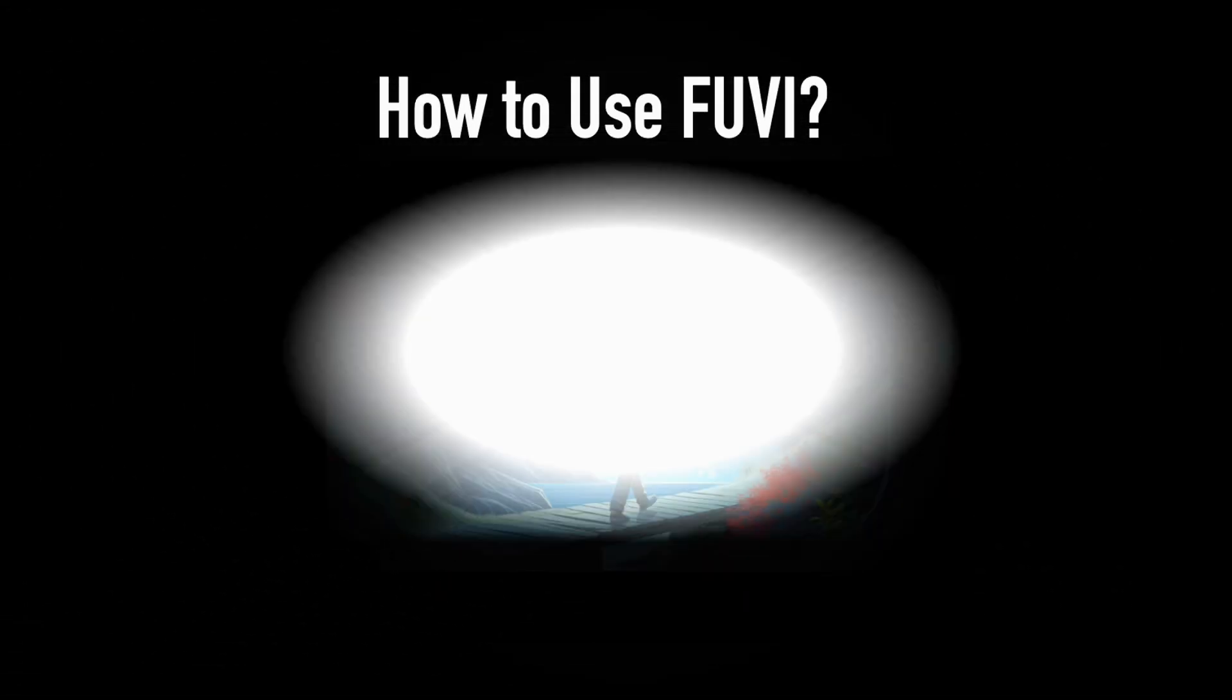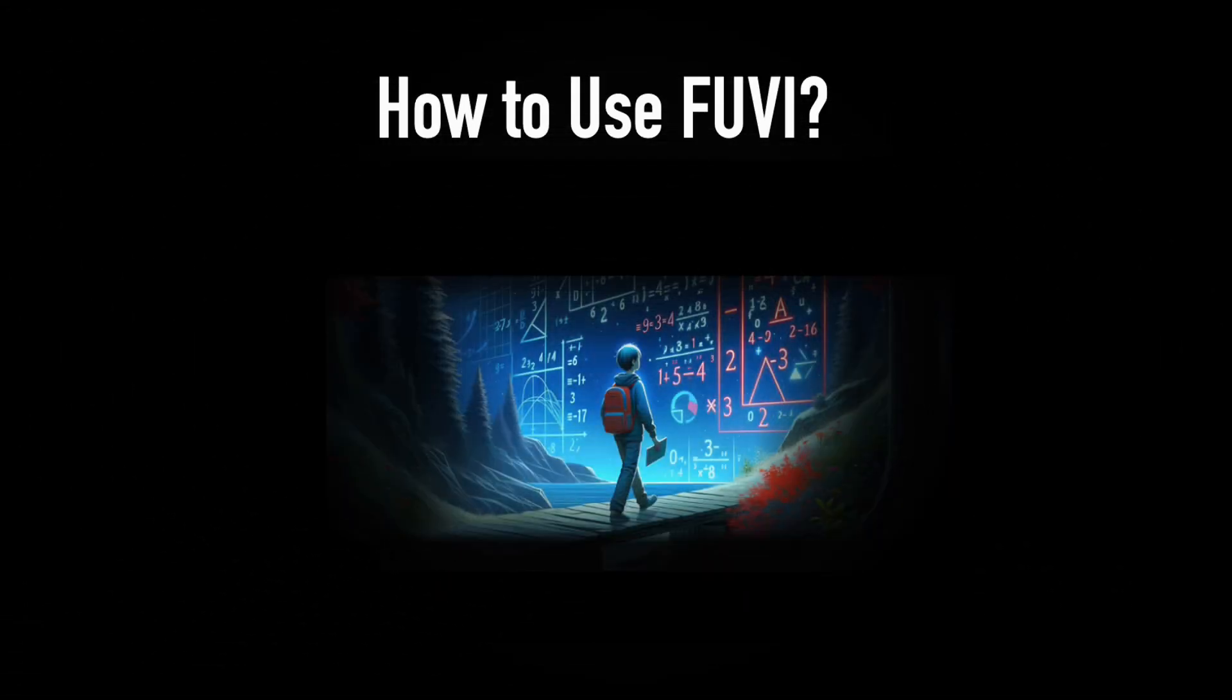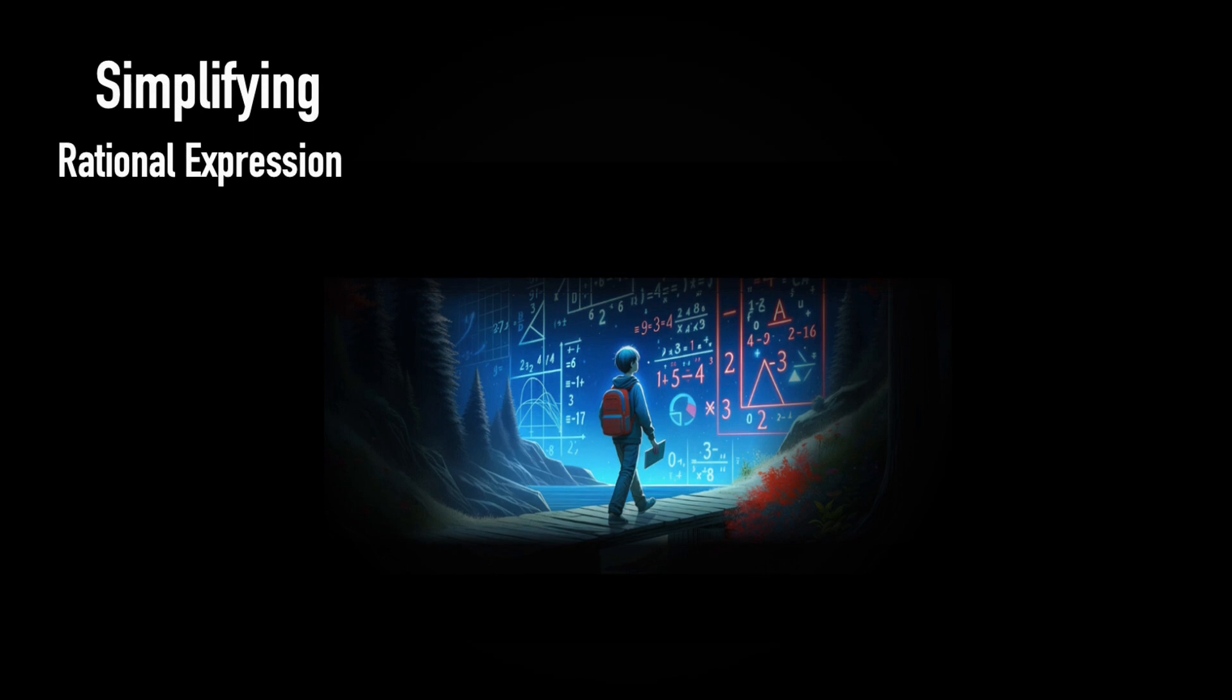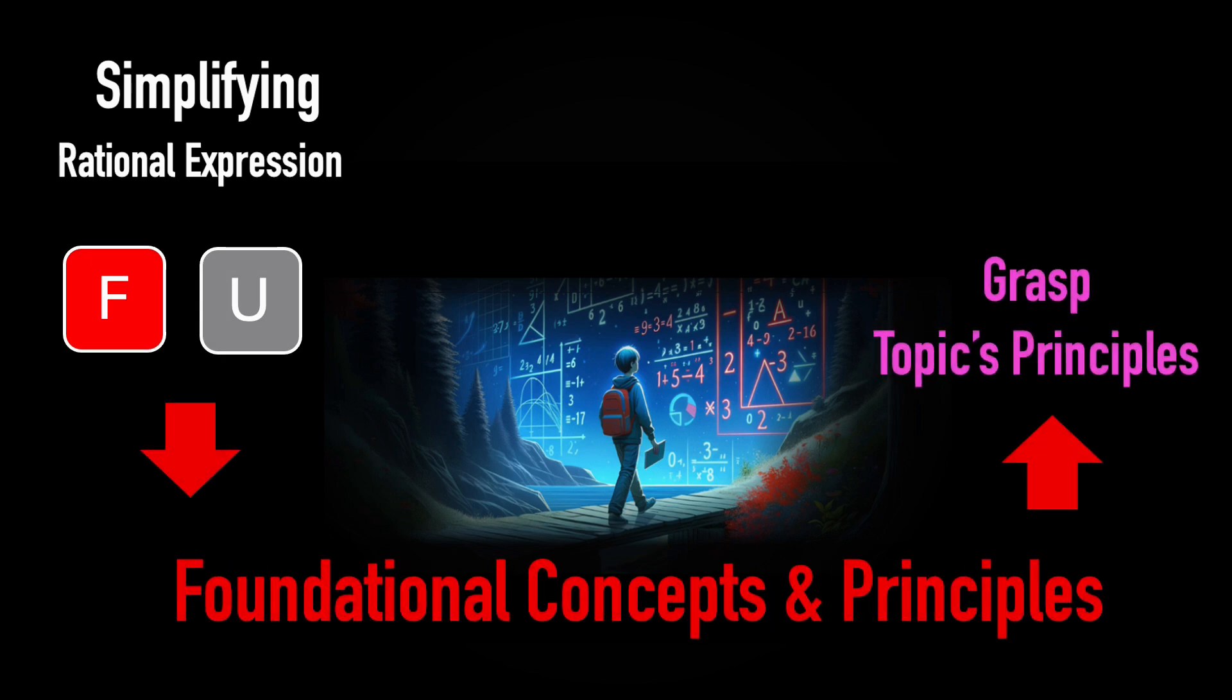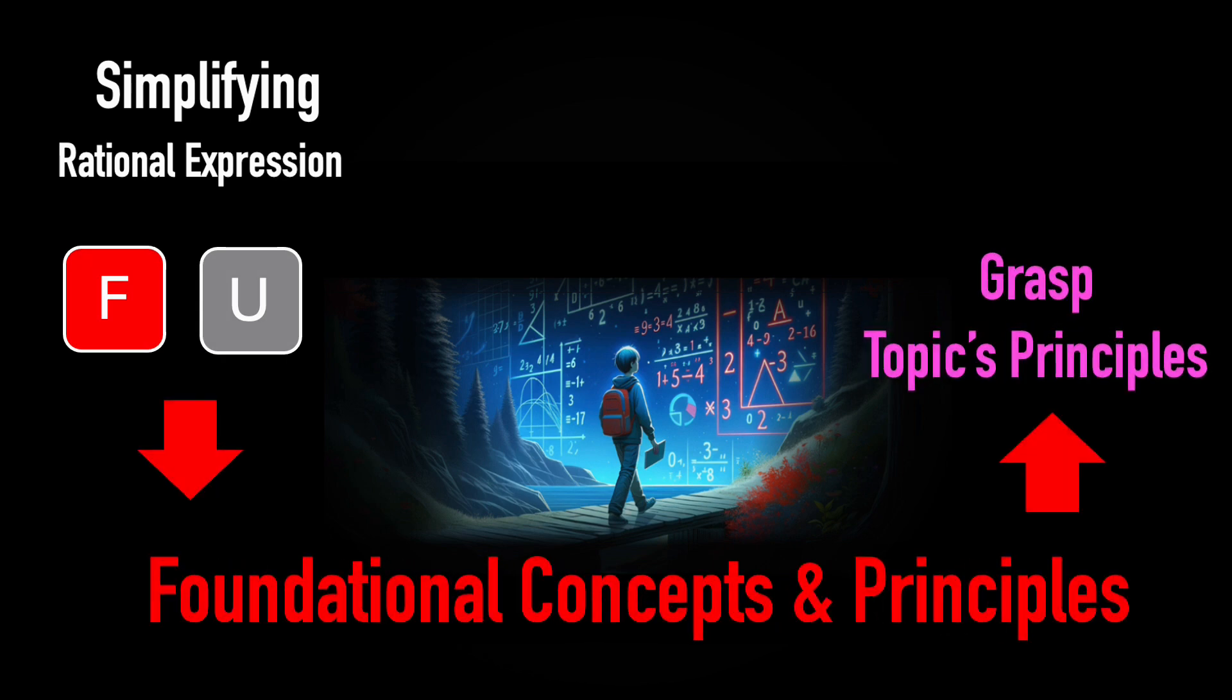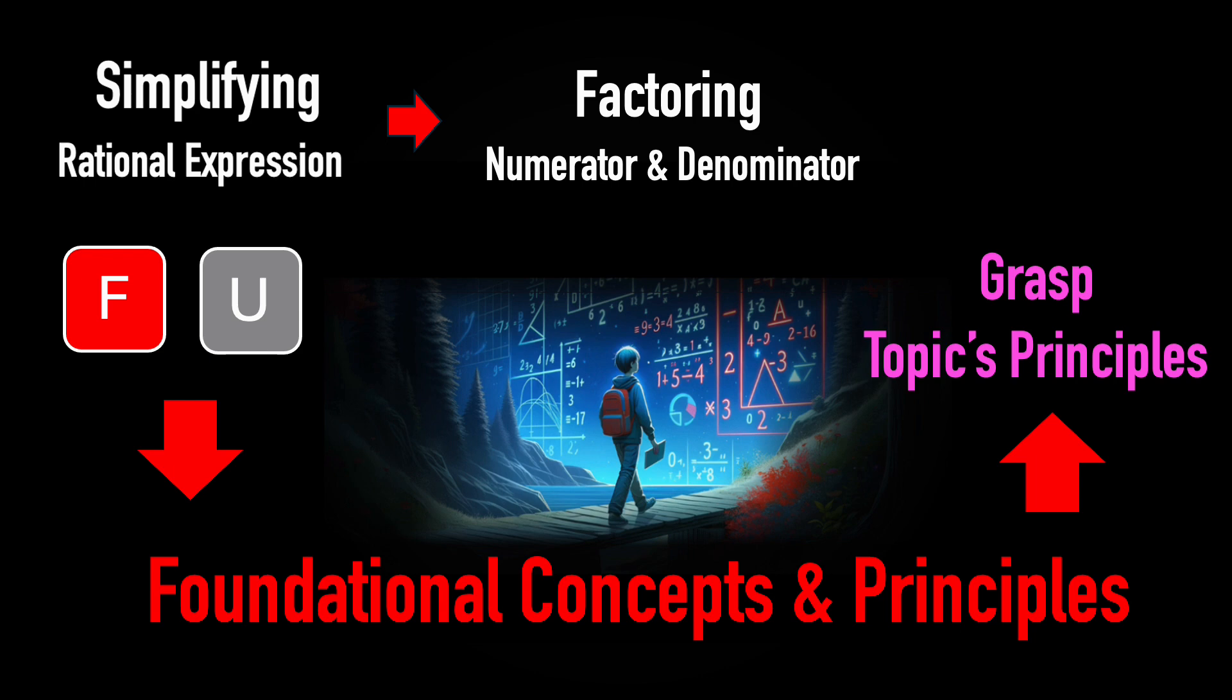How to use FUVI. Take this topic as an example: simplifying rational expressions. First, use the F and U buttons to quickly grasp the topic's principles, factoring the numerator and denominator, then canceling the greatest common factor.